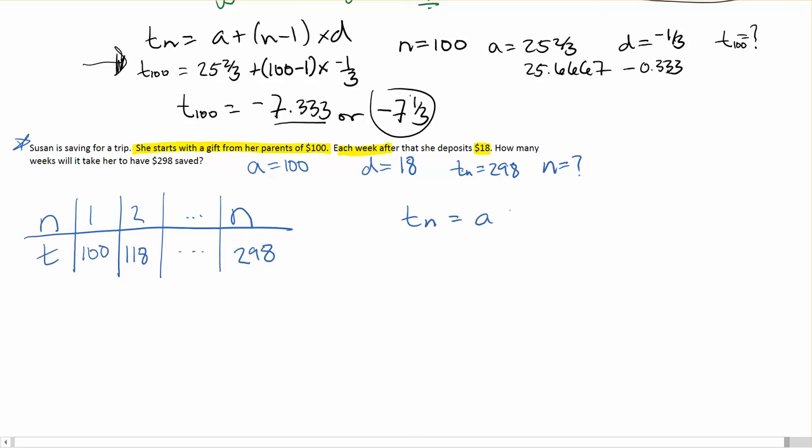T sub N is equal to A plus (N-1) times D. So I know this, I know this, and I know this, and I don't know this.